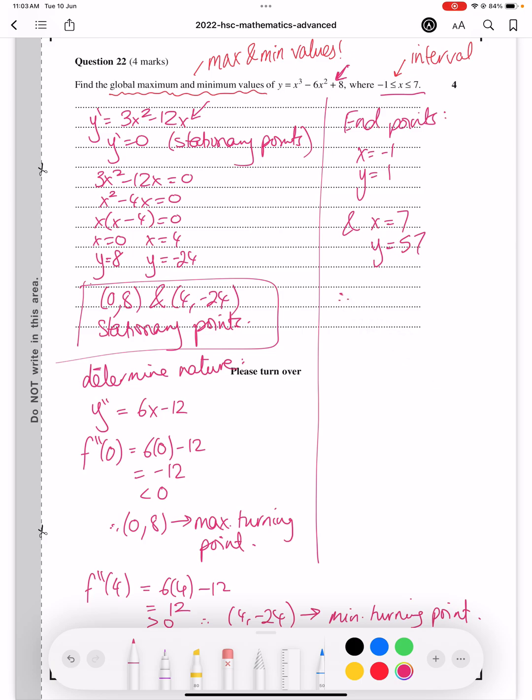And so therefore, we can conclude that our global max y value is 57 and global minimum y value is minus 24. And that is how to solve this question.